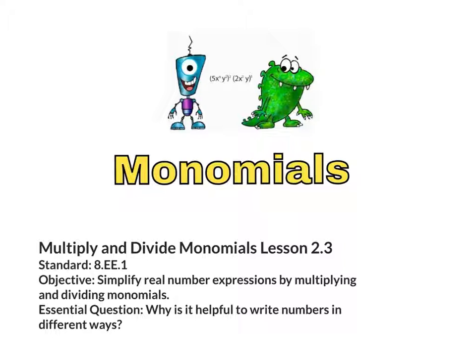Today's lesson is to multiply and divide monomials. Lesson 2.3. The standard is 8EE1. The objective is to simplify real number expressions by multiplying and dividing monomials. The essential question is: why is it helpful to write numbers in different ways?